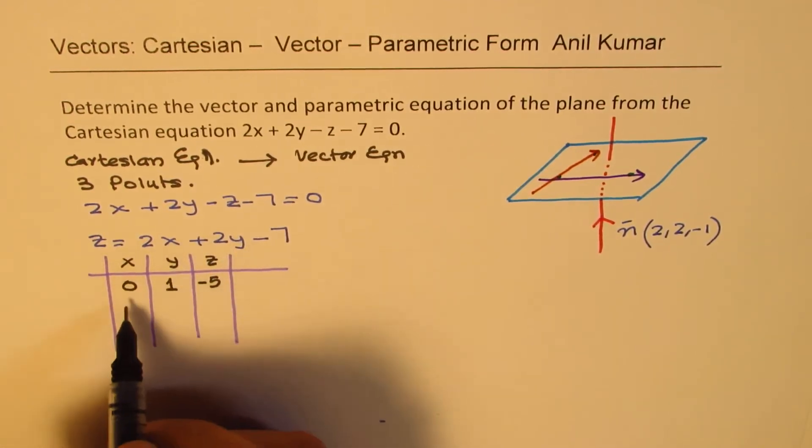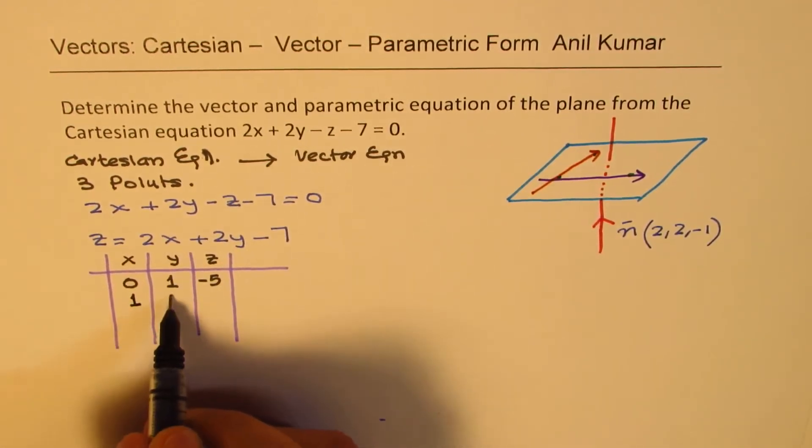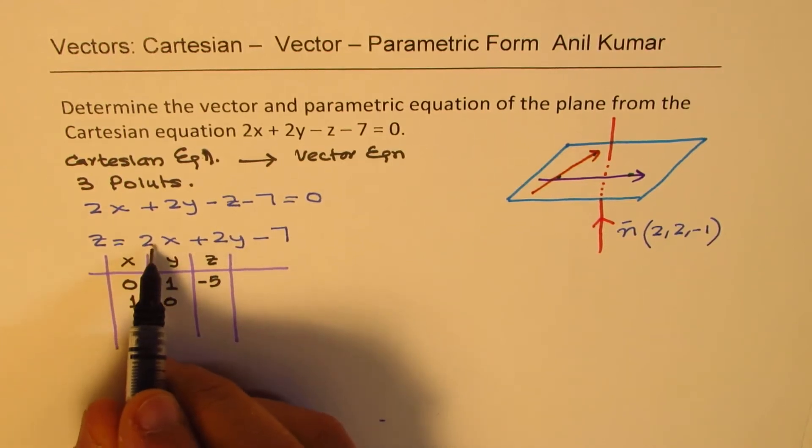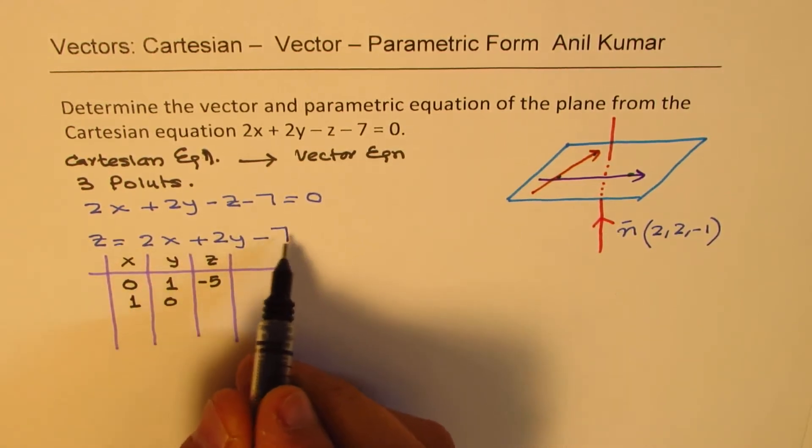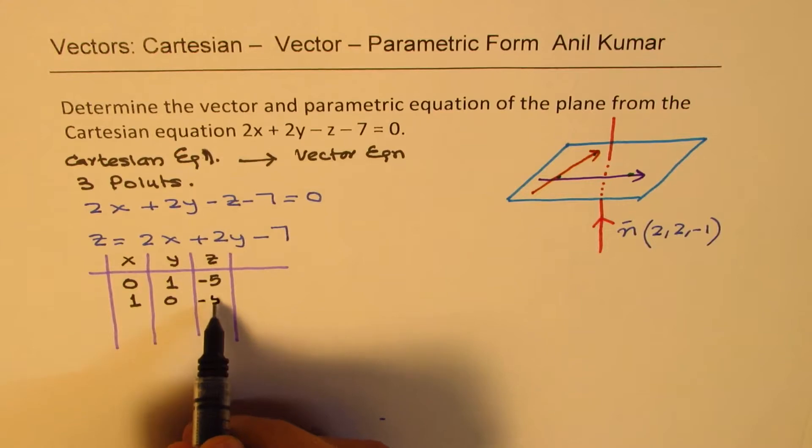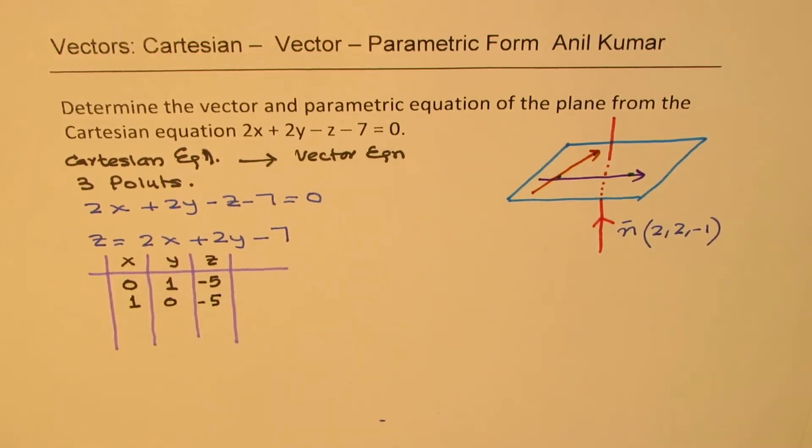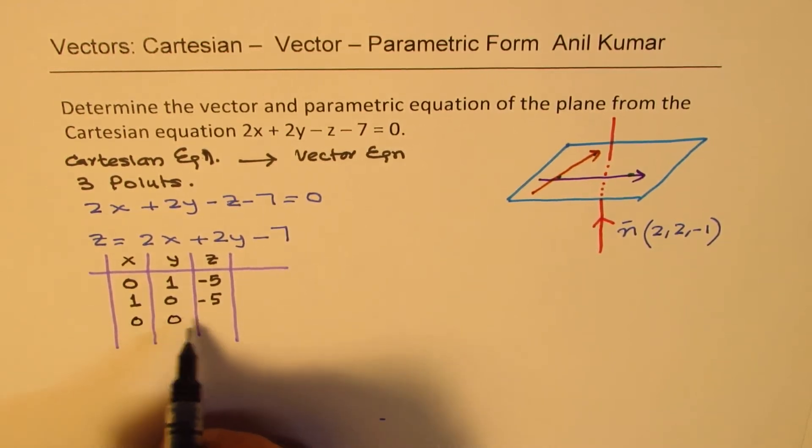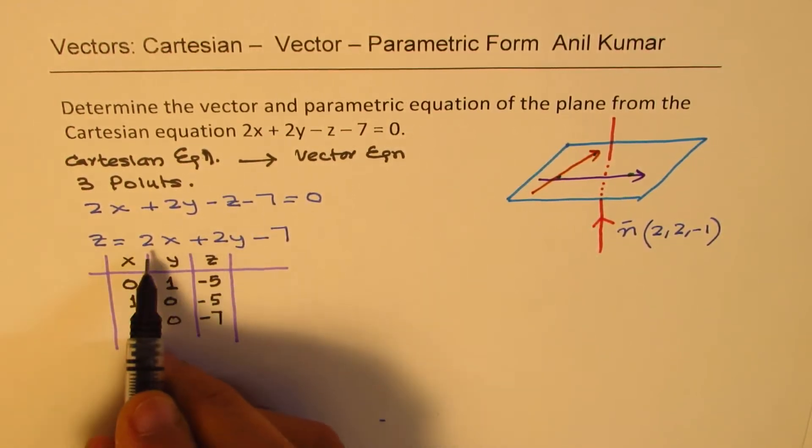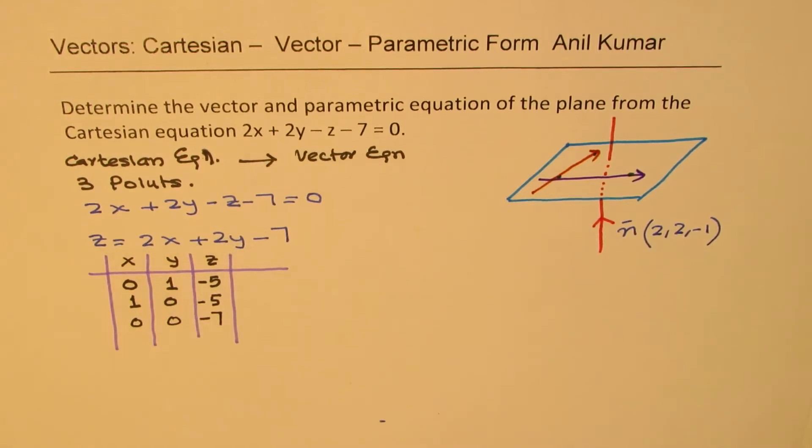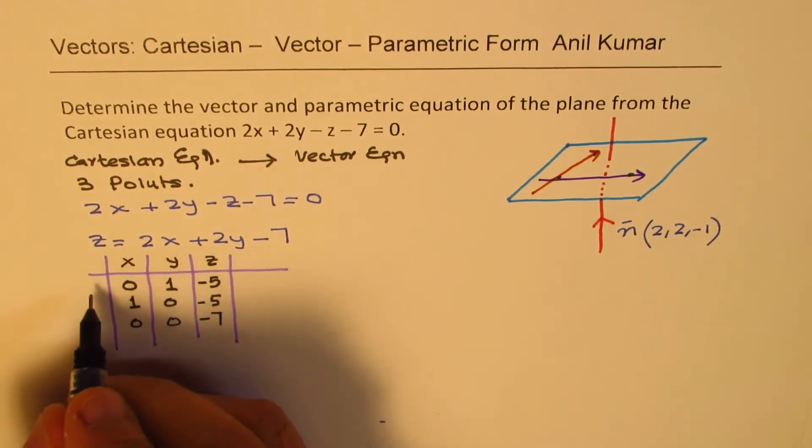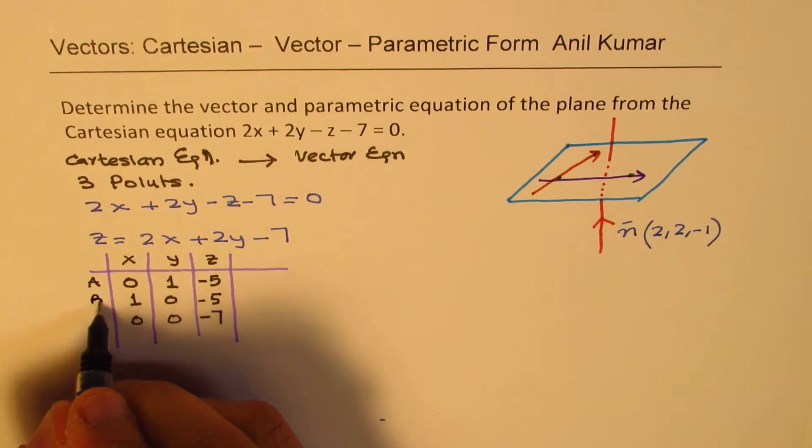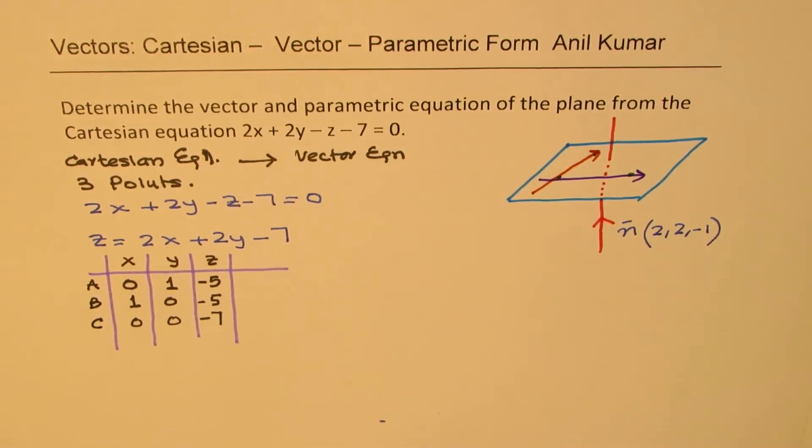Now, we could do something like this. I could have placed 1 for x, 0 for y. So, 1 means 2 here, and 2 minus 7 is again minus 5. So, I've got two points. We can also place both of them as 0. So, we could say 0, 0, and minus 7. So, that gives you the third point. Let's call these points as a, b, and c.